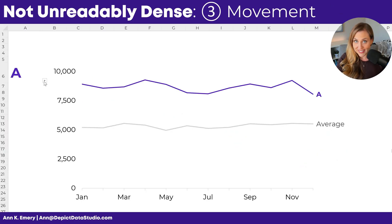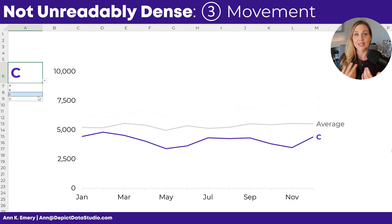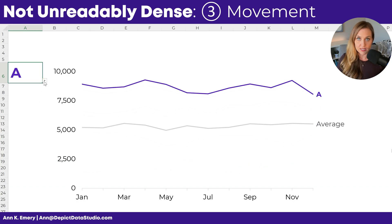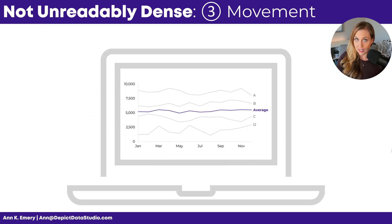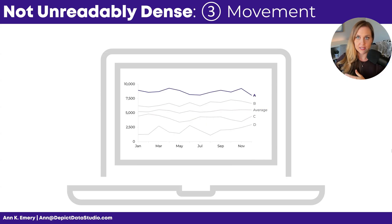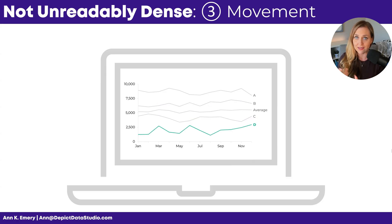Fix number three is movement. You can create movement in a few different ways. You might set up a dynamic dashboard or a dynamic website where people can filter through and interact with the data themselves. You could also set up movement through a GIF — a looping image that you lay out first frame by frame, and then GIF them all together. GIFs are great for social media and can be embedded on your website. They're much more interesting than a static image.